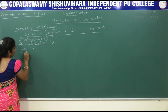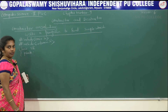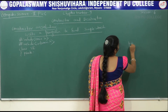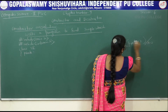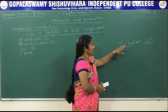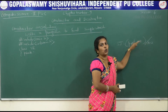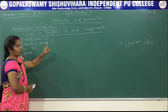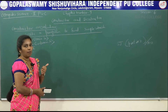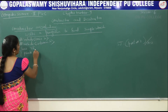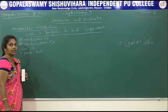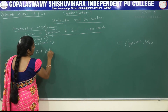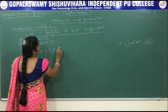In the private section we are declaring the variables. To find simple interest, what is the formula? P into T into R, whole thing divided by 100. This is the formula to find simple interest. Simple interest requires principal amount P, time T, and rate of interest R, divided by 100. These may be in fractional format, that is why I am declaring these variables in float format. Float P, T, R. To store the result, I will use a variable SIM1 for simple interest.